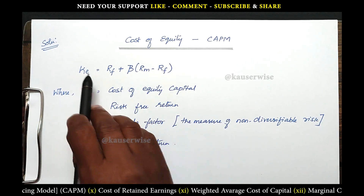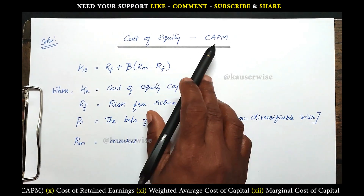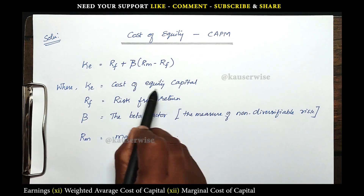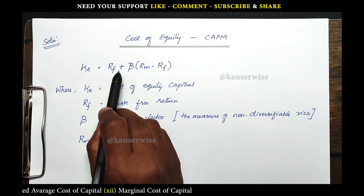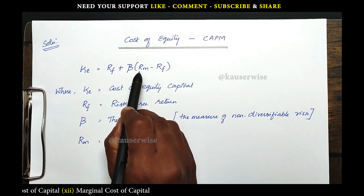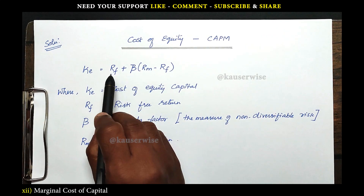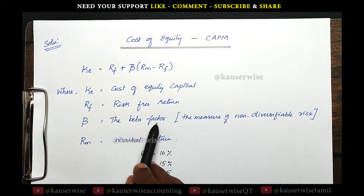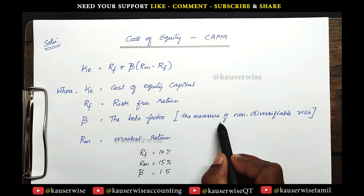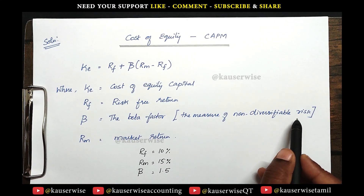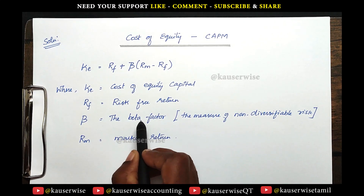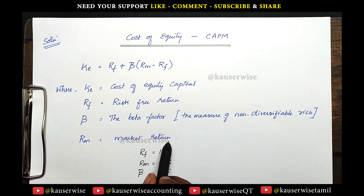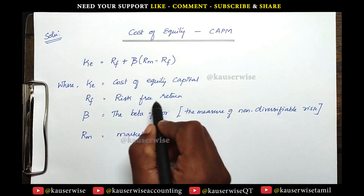This is the formula to find out the cost of equity according to the CAPM model. KE, which refers to cost of equity, is equal to RF plus beta into RM minus RF. RF refers to risk-free return. Beta means the beta factor, that is the measure of non-diversifiable risk — this factor will be given in the problem. RM refers to market return.